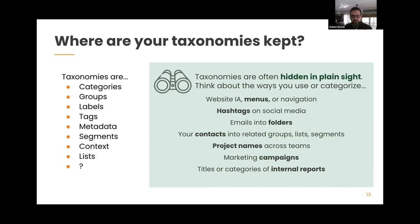Bottom-up ways to reveal taxonomies in your organization include talking to different members of your team. Ask: if you're getting emails about a particular event, how do you organize them? Do you organize by project, by contact, by priority? Understanding how people naturally categorize things reveals the implicit taxonomies already in use.